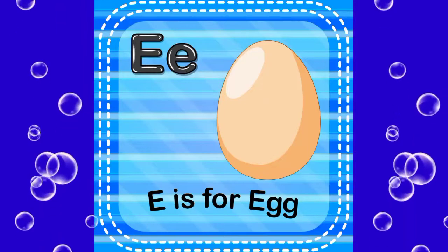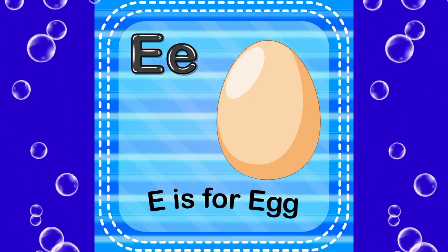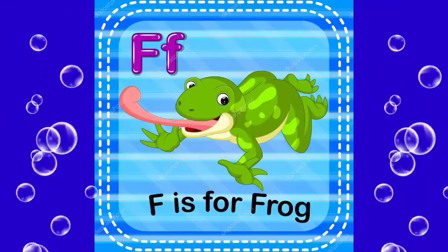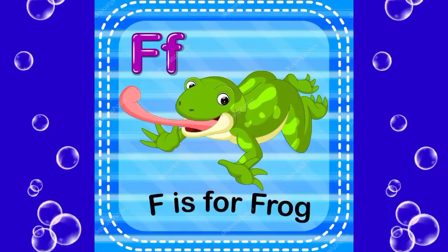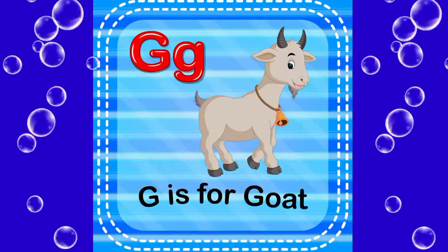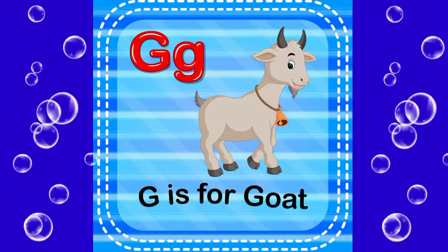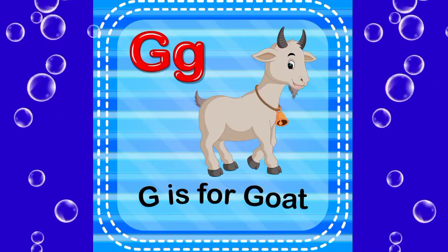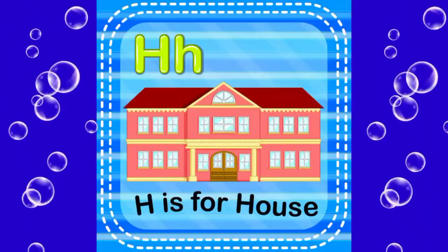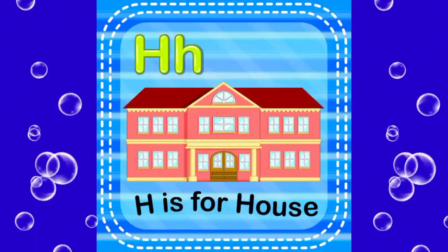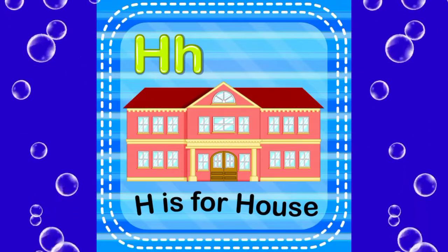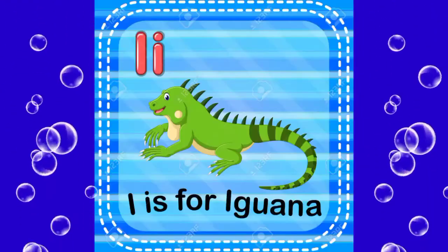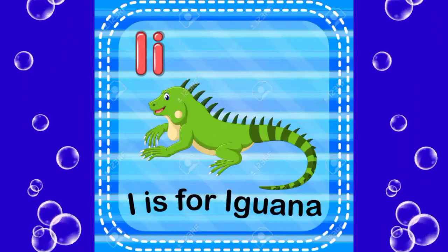E is for egg, F is for frog, D is for goat, S is for house, I is for iguana.